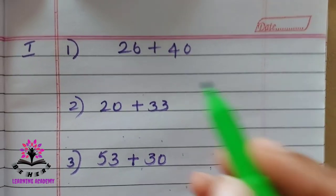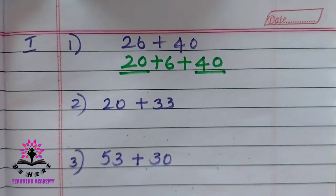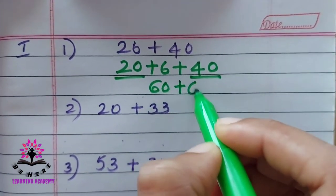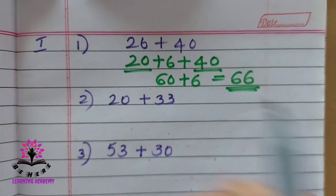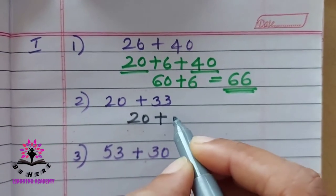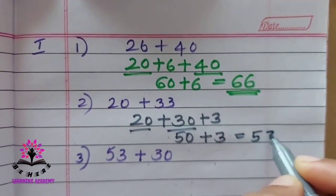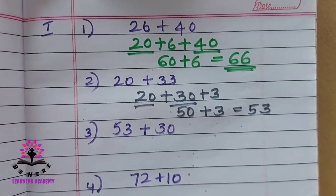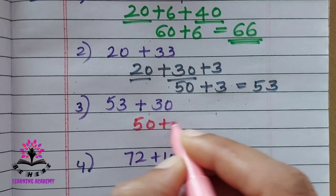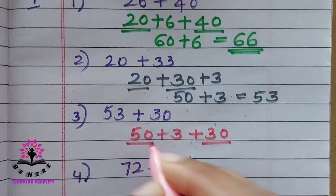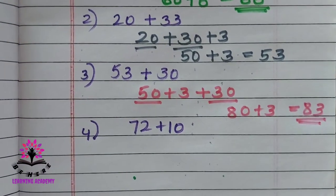Complete the blanks with suitable answers. First: 26 plus 40 — write 26 as 20 plus 6, plus 40. Then 20 plus 40 is 60, plus 6 is 66. Second: 20 plus 33 — write 33 as 30 plus 3. Then 20 plus 30 is 50, plus 3 is 53. Third: 53 plus 30 — write 53 as 50 plus 3, plus 30. Then 50 plus 30 is 80, plus 3 is 83. Solve the last problem by yourself.